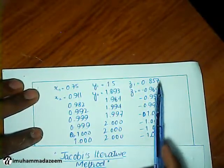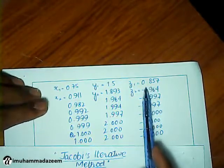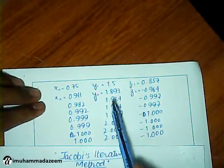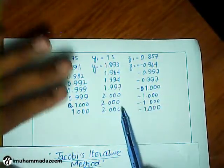0.75, 1.5, and 0.857. Using the same process, we can find these values until all these three values are concentrated to a single decimal point up to three decimal places.